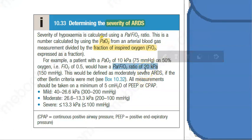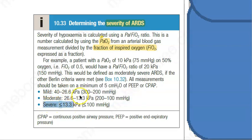So, mild ARDS is a PaO2/FiO2 ratio of 26–42 kPa, moderate is around 13–26, and if it is less than 13, it is severe ARDS. This ratio of partial pressure of oxygen in arterial blood to the fraction of inspired oxygen — when it is less than 13, that means the artery is not able to pick up oxygen, indicating severe ARDS.